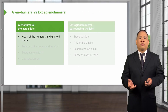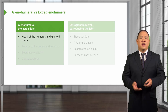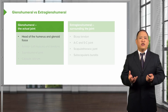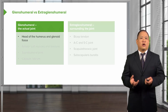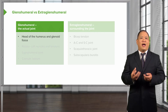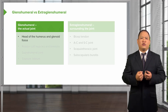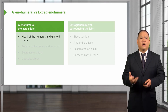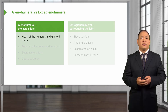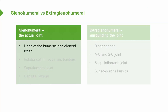In this chart, we're differentiating the different structures that could potentially cause shoulder pain. There are structures within the shoulder at the glenohumeral joint, and then there are extra-glenohumeral structures outside of the actual joint that could also cause shoulder pain. Looking at the glenohumeral sources, we could have degeneration or calcifications of the humerus and the glenoid fossa, which could cause pain at the shoulder.